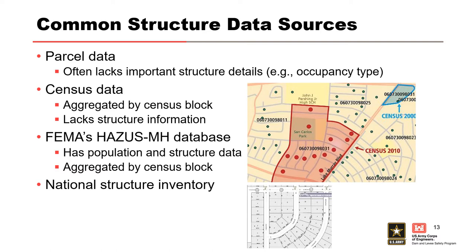Now I want to talk about common structure data sources when developing a structure inventory. Parcel data is the best you can get — it generally has parcel polygons that define where structures are located and gives good location information. However, pitfalls include that it can often lack important details such as population, occupancy types, number of stories, and other structure attributes important for consequence assessment. If you only have structure location, you have to go to other data sources.